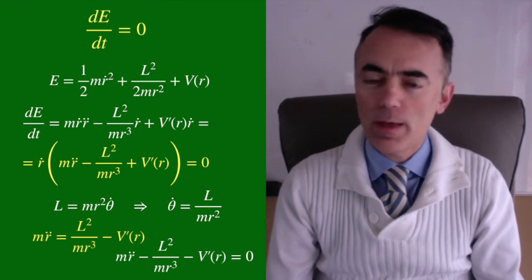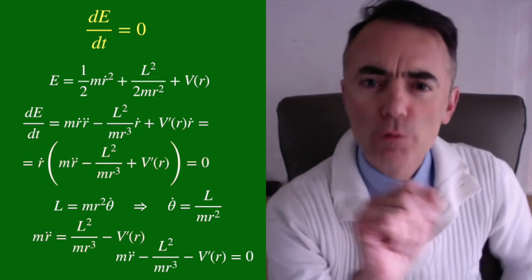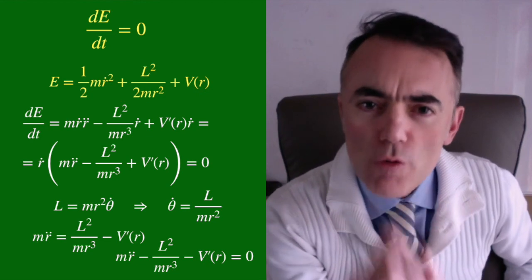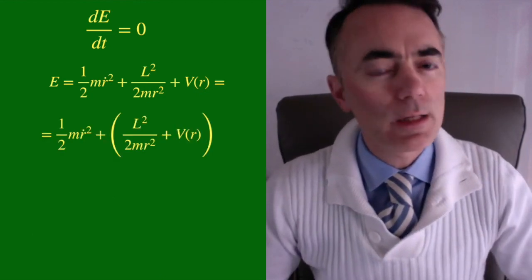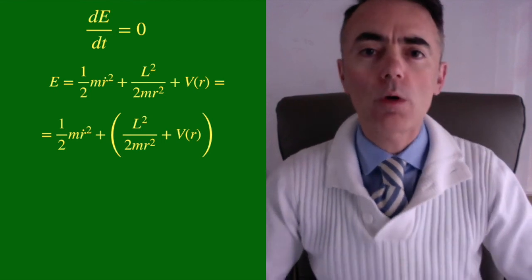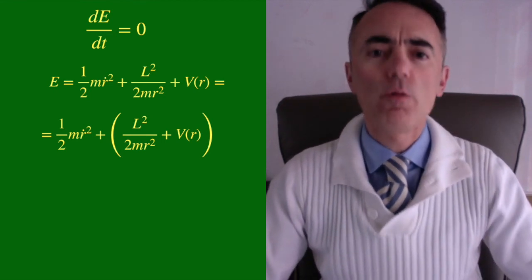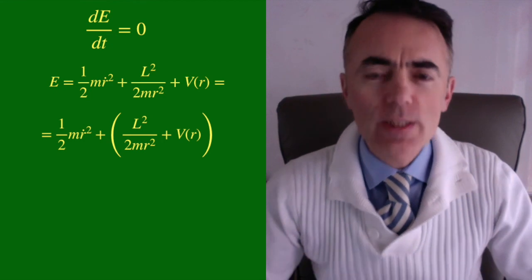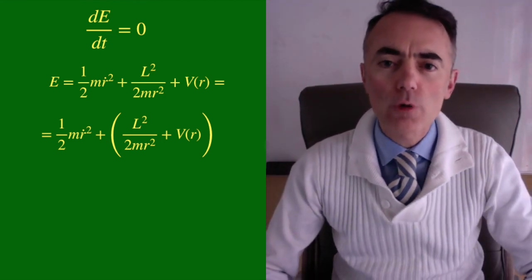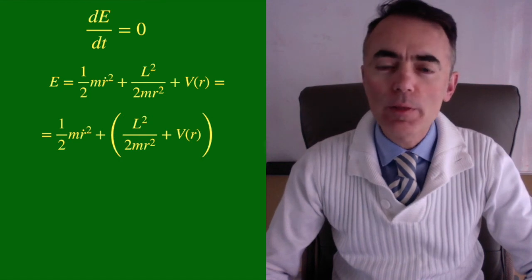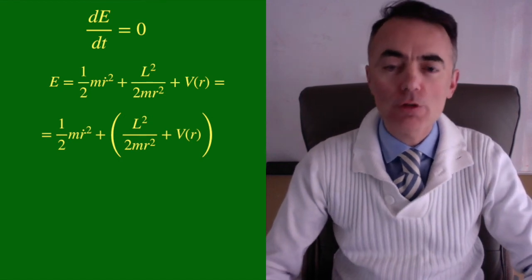But there is more than that. Look at the expression for the energy. We can rewrite it as one-half of mr dot squared plus L squared over 2mr squared plus V of r. What we have here is the kinetic energy, an effective potential that only depends on r. This happens to be the energy of a one-dimensional system.